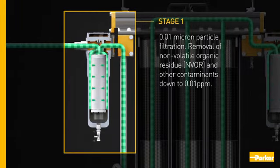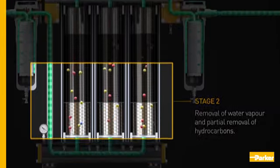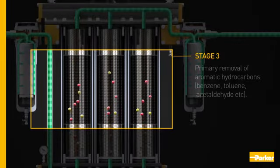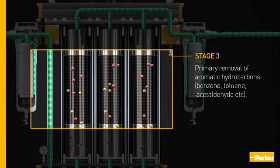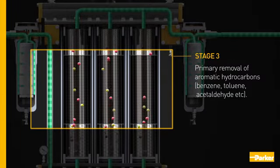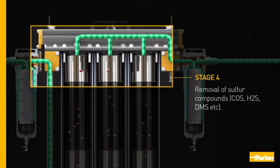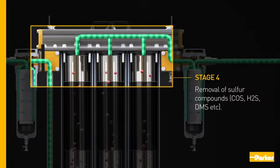Stage 2 and Stage 3 provide partial removal of water vapor and partial removal of hydrocarbons, with primary removal of aromatic hydrocarbons including benzene, toluene, and acetaldehyde. Stage 4 handles removal of sulfur compounds including COS, H2S, and DMS.